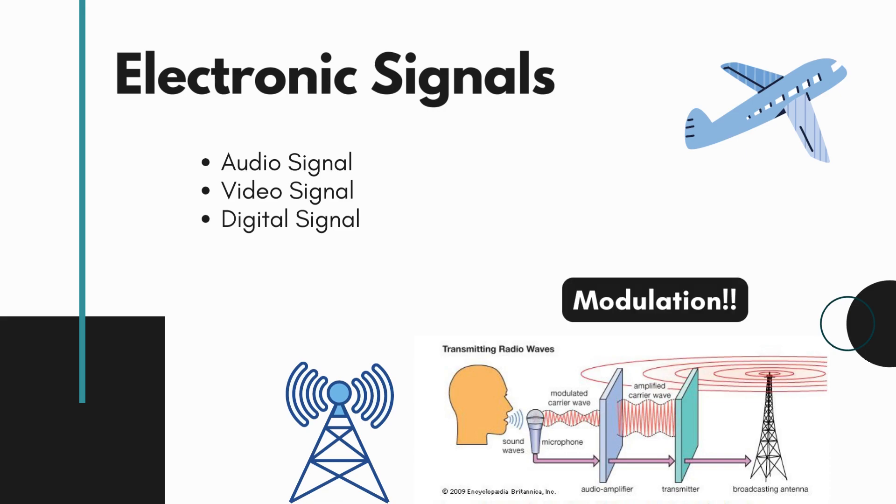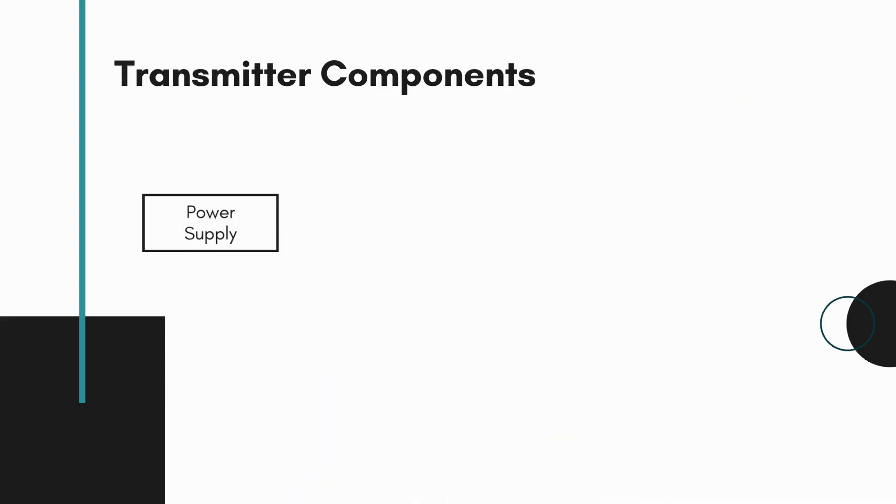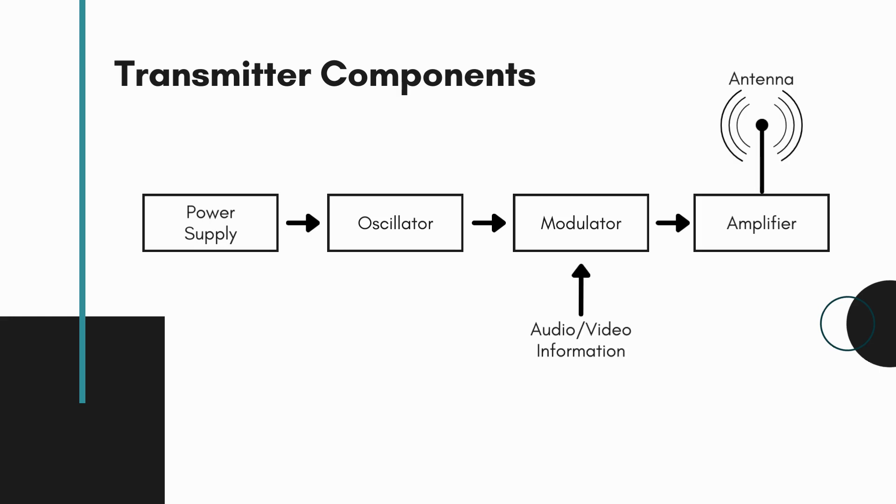This process is called modulation as discussed in the first lecture. The basic transmitter consists of a power supply, input signal and oscillator circuit to generate the radio frequency signal, a modulator circuit to add the information to be transmitted to the carrier wave produced by the oscillator, and an amplifier circuit to increase the power of the signal and hence the range of the signal, and the antenna with an impedance matching circuit.